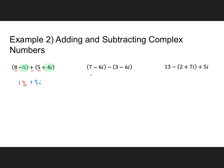For this next problem, I like to distribute my negative signs first so I don't make mistakes. Looking at like terms: I have 7 minus 3, which is 4. And then I have minus 6i plus 6i, which is 0. So my final answer is just 4. I don't have to write 0i — I could, but it's not necessary.